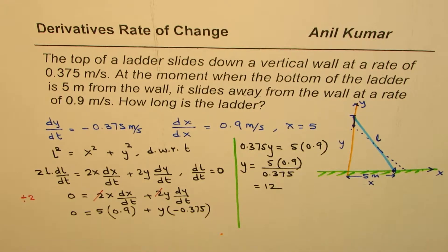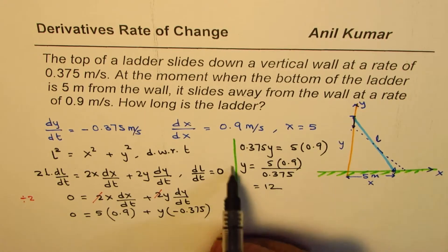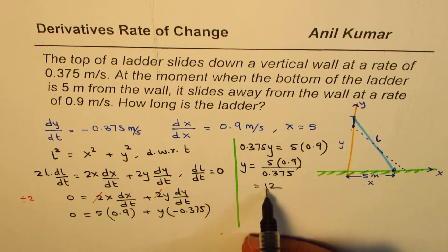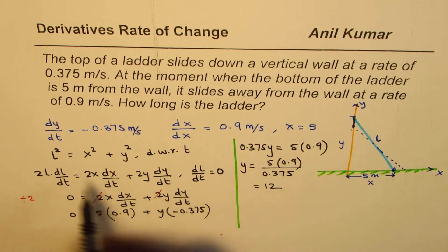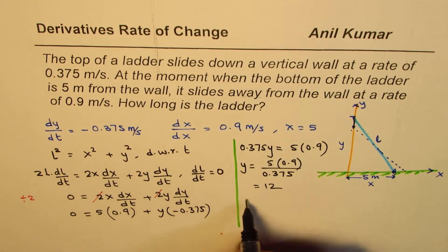Since we know that at this time when the distance of this foot is 5 meters away, y is 12, we can find L by substituting in this equation, right?